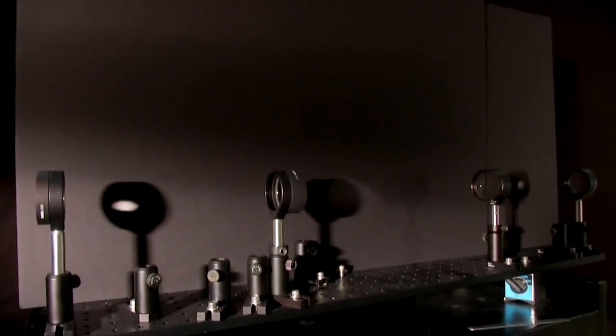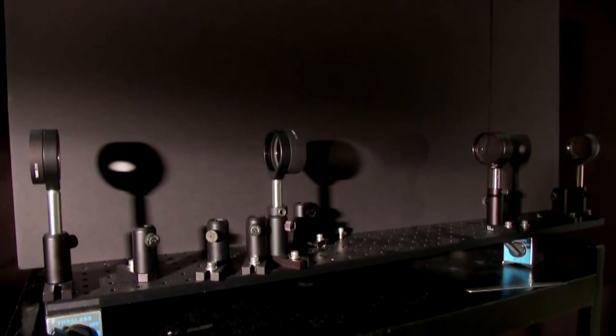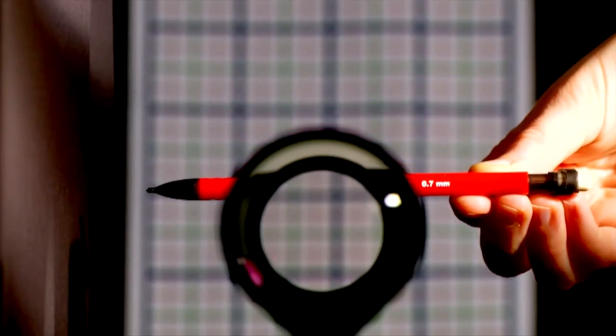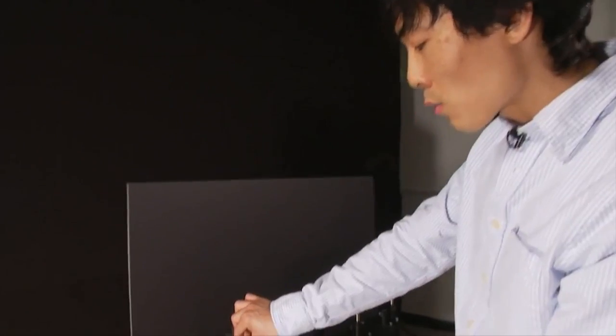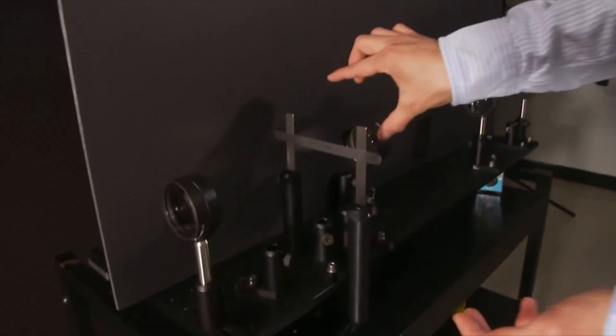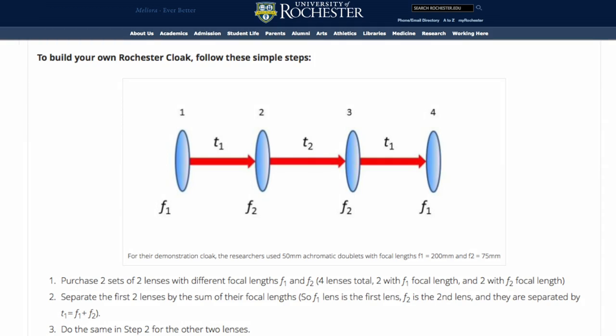And of course, an object would only be hidden in the lens's field, though the researchers say the device could be scaled up with larger lenses. And even though the researchers spent $1,000, they also say the same thing could be built for around $100, and they even posted instructions on the U of R's website for anyone interested in making their own.